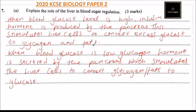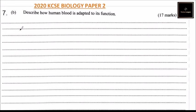That's how you answer that question to get three marks. This is question number seven part B. We are told: describe how human blood is adapted to its functions. In this question we will look at the parts of the blood — we start with plasma, then platelets, white blood cells, and finally red blood cells, discussing the adaptation of each part. The question is 17 marks.